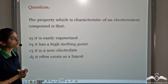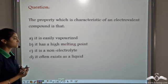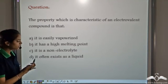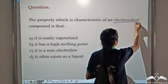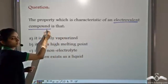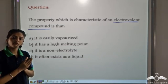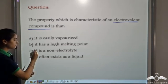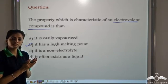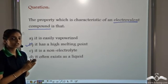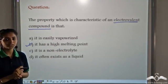A property characteristic of an electrovalent compound is that it has a high melting point. We know that electrovalent compounds have electrostatic forces of attraction. These forces of attraction are very strong, and this is the reason why they have a high melting point. Since it is not easy to break the ionic bond, the electrovalent compounds have a high melting point. So these are some of the characteristics of ionic and covalent compounds.